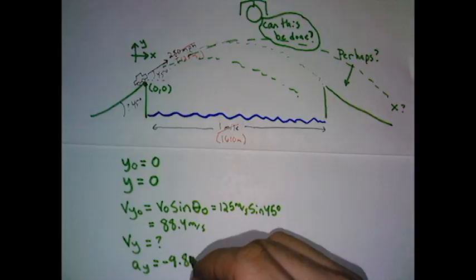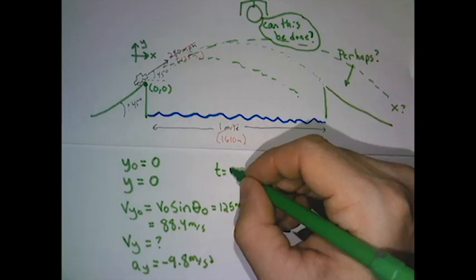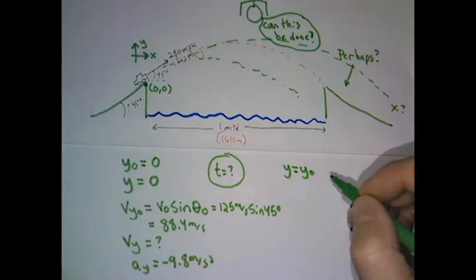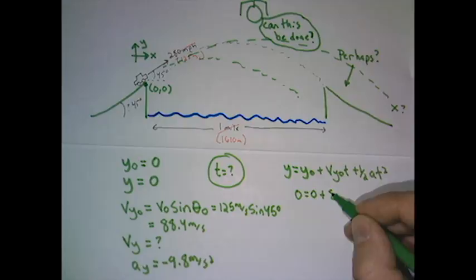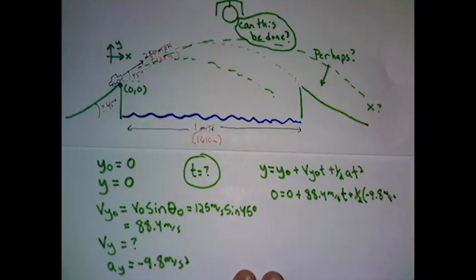Now, we're going to use the y direction to find his time in the air, and then use that back in the x direction to figure out if he makes it far enough. So we look at my list of equations. I don't know ending velocity, so I'll pick the equation that doesn't have ending velocity in it. So I'll substitute the values that we have. And I get an equation that has the t and the t squared is unknown. I've got to solve this for t.